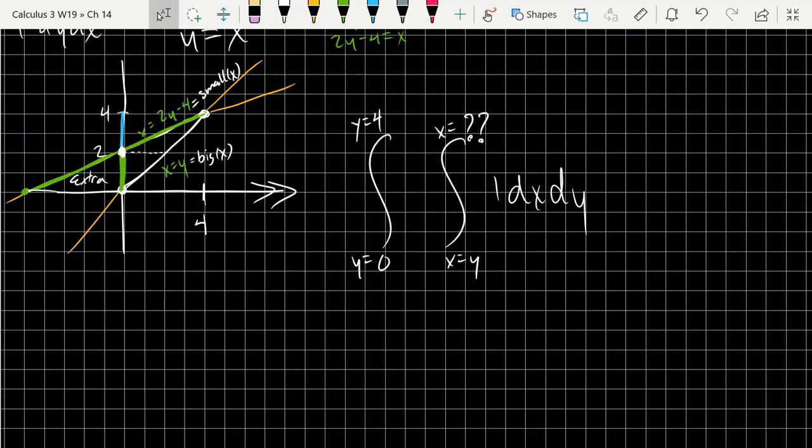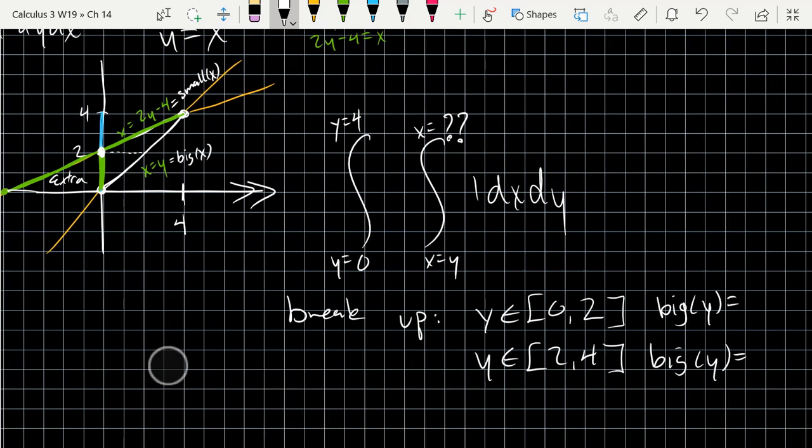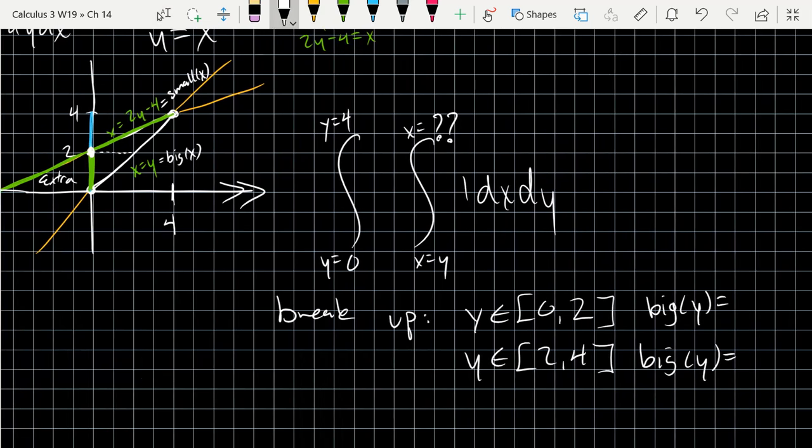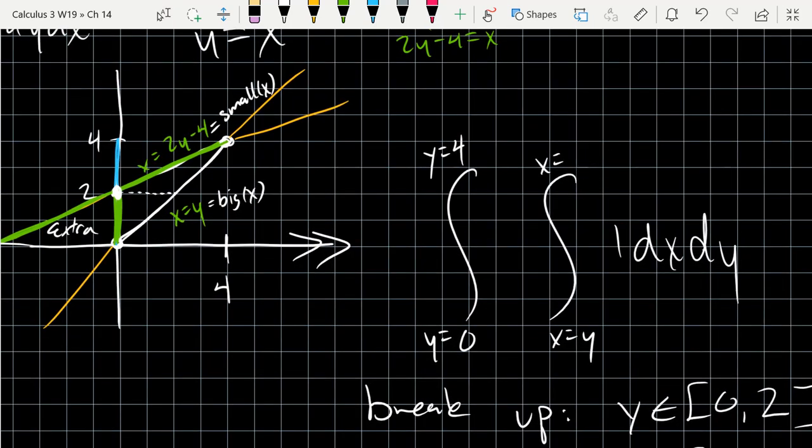So what I need to do is break it into two pieces. And our first will be y between 0 and 2. And the second, y is between 2 and 4. And then our big function of y is going to change. Our little function is the same. So from 0 to 2, we had a problem. The big function is x equals y, the small function is what I have to find.